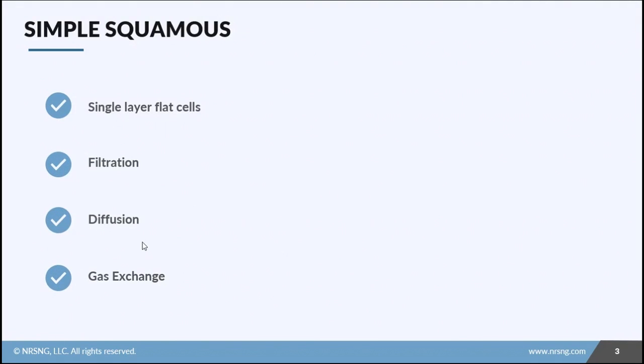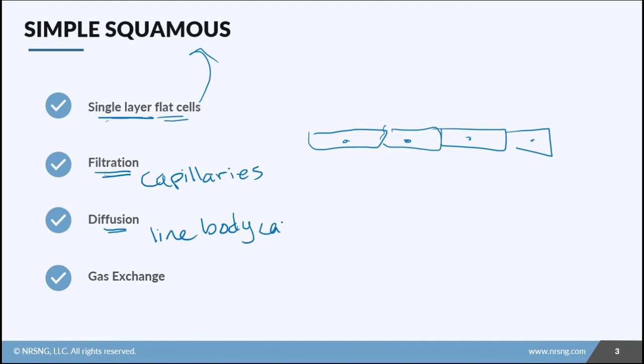First is simple squamous. It's simple, so it's a single layer. The top layer, which is the only layer, is flat, so we call it squamous. As you can tell, because it's such a thin layer, the biggest benefit here is we can control what gets to pass through. What we see in simple squamous is benefits of filtration, which happens in the capillaries, diffusion through membranes that line body cavities, and gas exchange in the alveoli, the exchange of CO2 and oxygen.